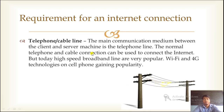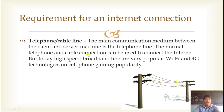Next is telephone or cable line. The main communication between the client and server machine is the telephone line — we can say telephone line or cable line — which connects the client machine with the server machine. The normal telephone and cable connection can be used to connect to internet, but today high speed broadband lines are very popular. Instead of cable or telephone line, nowadays we are using broadband line, and even Wi-Fi and 4G technology on cell phones are gaining popularity.